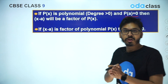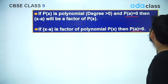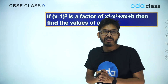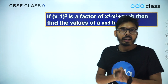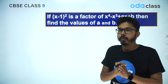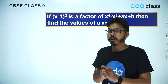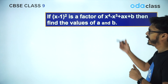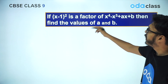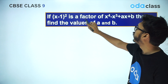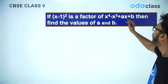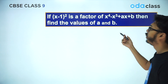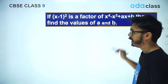Let's see the first question which is based on Factor Theorem. This is a little unconventional question — you might not find it in 9th standard NCERT, but it's one of the most beautiful questions you will ever come across related to Factor Theorem. The question is: if (x - 1)² is a factor of x⁴ - x³ + Ax + B, then find the values of A and B.